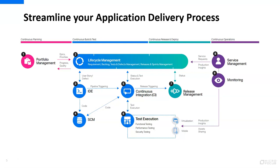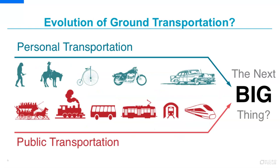Before we go into the product itself, let's understand why Octane is needed. You may have Jira, Azure DevOps, Quality Center, or other testing tools — so why is ALM Octane needed? To understand this, let's first look at the evolution of ground transportation. Human beings improved transportation from walking to horses, cycles, motorbikes, and finally cars, both for personal travel and public transportation.